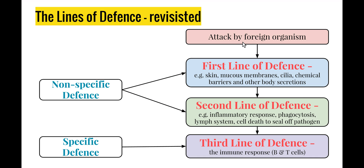Up until now, we've been looking at the first line of defense — how we stop pathogens from getting into the body. If the first line of defense fails, we need a second line of defense. The second line of defense includes these four things, and just like the first line of defense, it's a non-specific defense mechanism that will attack any pathogen entering the body to stop it from causing disease symptoms.